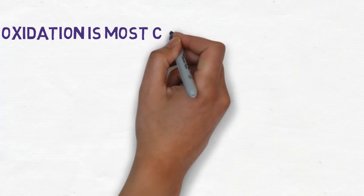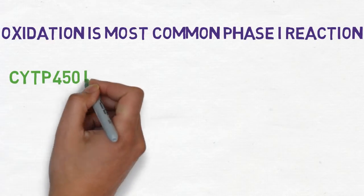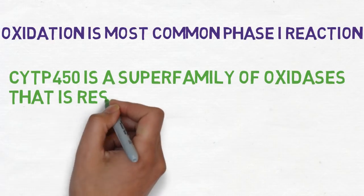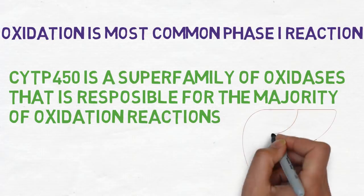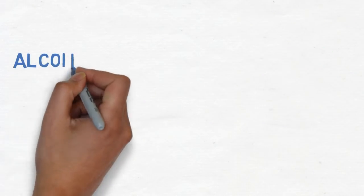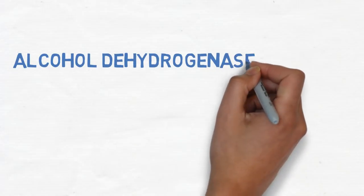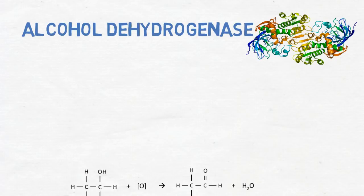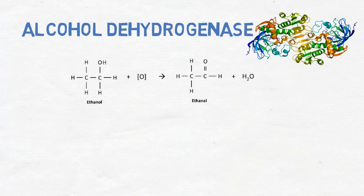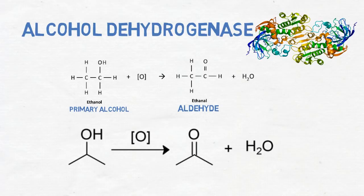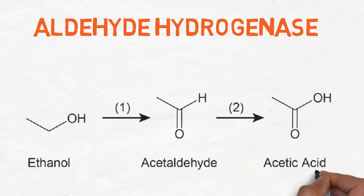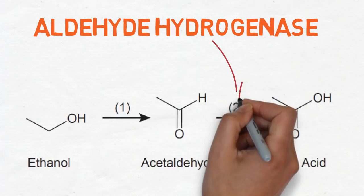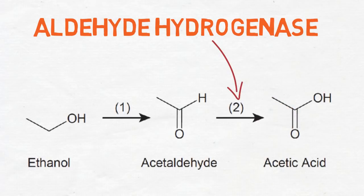Oxidation is the most common phase 1 reaction. Cytochrome P450 is a superfamily of oxidases responsible for the majority of oxidation reactions, found in very high concentrations in the liver. Oxidation can also happen through alcohol dehydrogenase, which oxidizes alcohol into aldehydes from primary alcohols and ketones from secondary alcohols. Aldehydes can be further oxidized to carboxylic acids by aldehyde dehydrogenase, as seen in the conversion of acetaldehyde to acetic acid during ethanol metabolism.